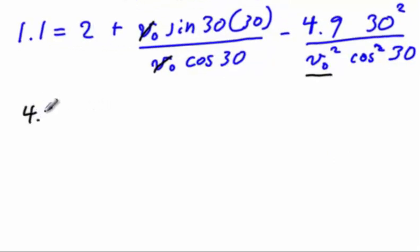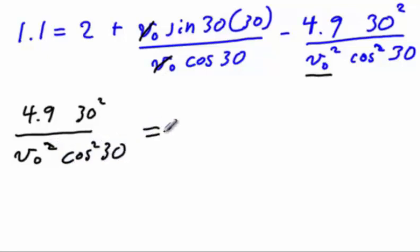Let's move the term with the v zero to the left and we'll put everything else on the right. We will have 4.9 times 30 squared over v zero squared cosine squared 30 equals, bringing the 1.1 over, 2 minus 1.1 is 0.9 plus sine of 30 over cosine of 30—so the value of 30 is tangent of 30—times 30.